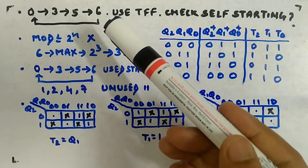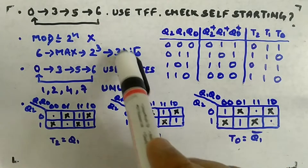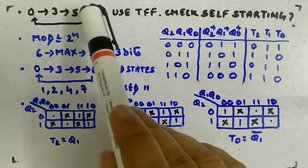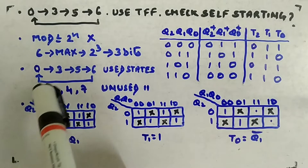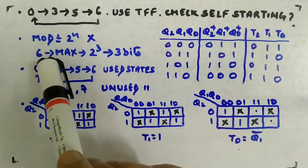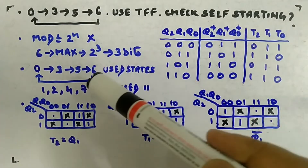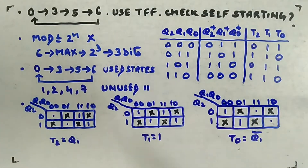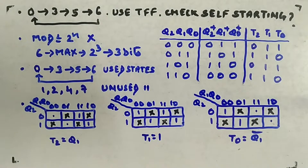For synchronous counters, you have to look at the maximum count. The technique that works in all cases is: look at the maximum value in the sequence, which is 6. How many bits are required to represent 6? Three bits — so 2^3 means you need three flip-flops.